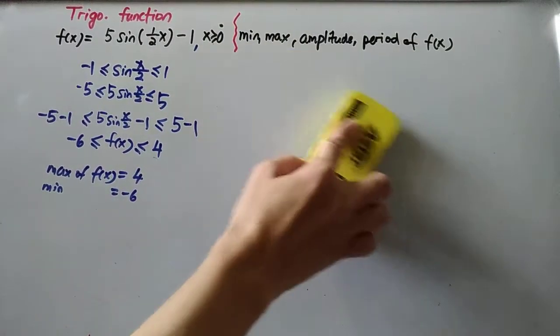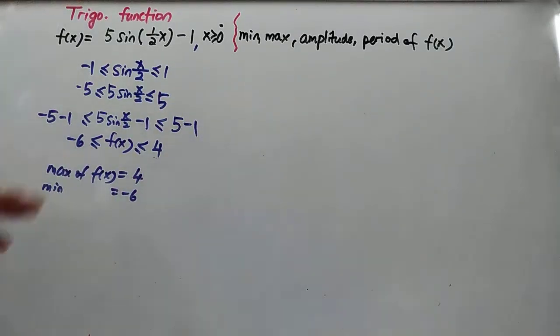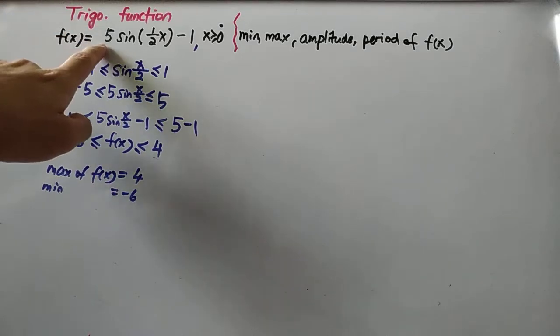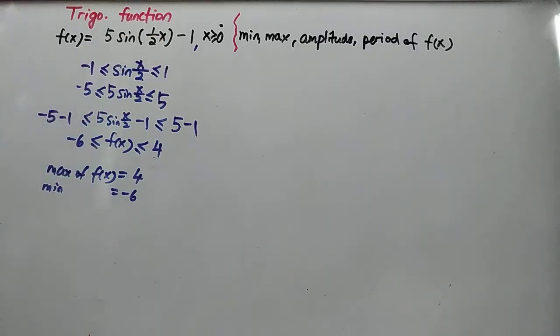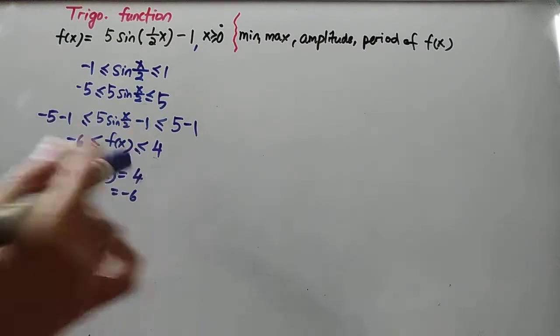For me, I will do it this way because using this way I can find two at the same time. And sometimes you are not given the coefficient here or the number here, so if you are using the other method you might have some trouble. Okay, so for this question both are okay.